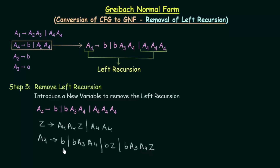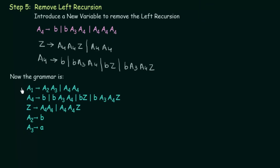If you look at this, A4 directly gives a terminal symbol, and in the other productions we always have a terminal symbol in the beginning with all variables preceded by a terminal symbol. So this A4 is in Greibach Normal Form. This is how we rewrite A4 using the new variable Z. This is the updated grammar: A1 remains as it is, A4 is rewritten to the new form, and Z gives A4, A4 and A4, A4, Z. A2 and A3 are unchanged.